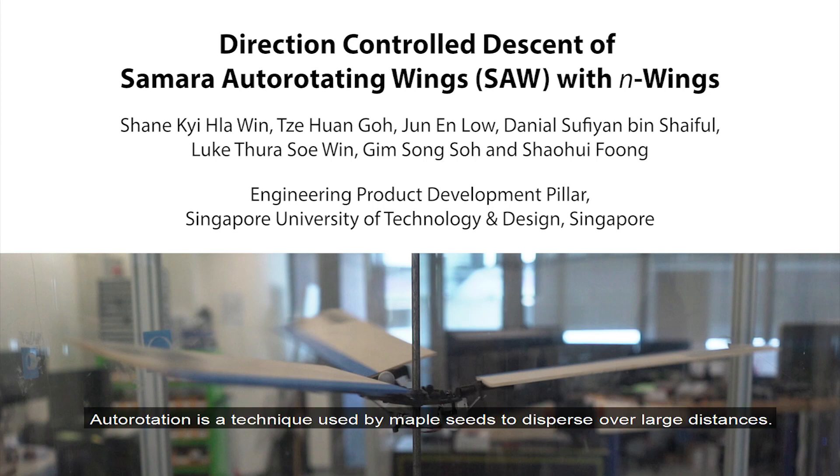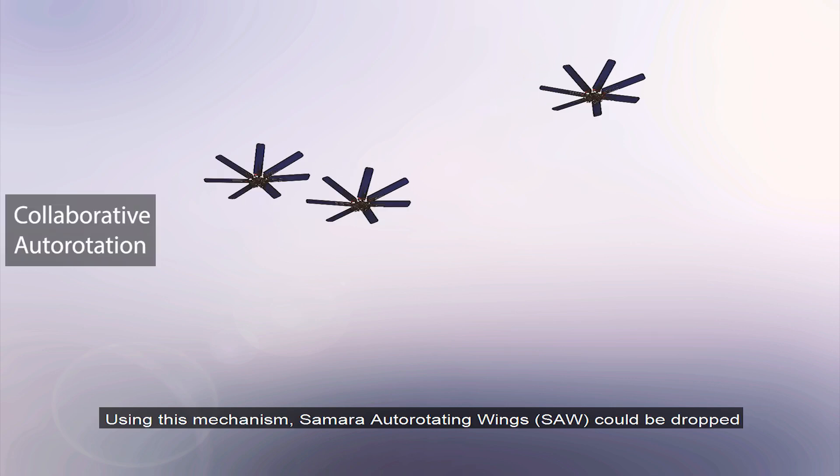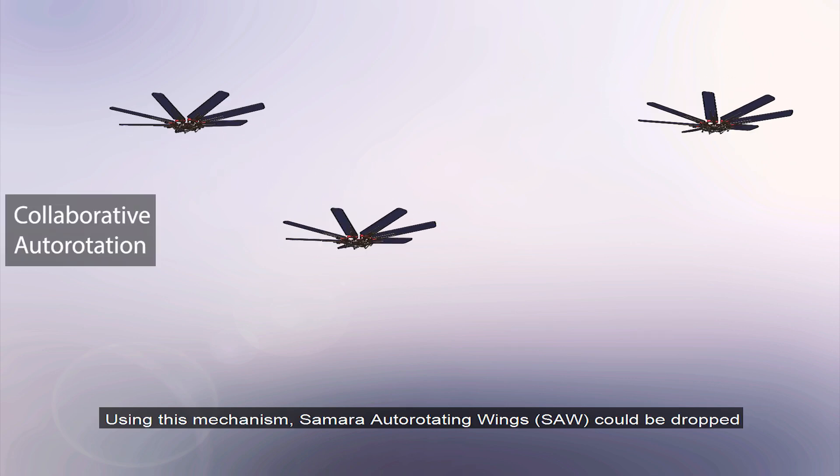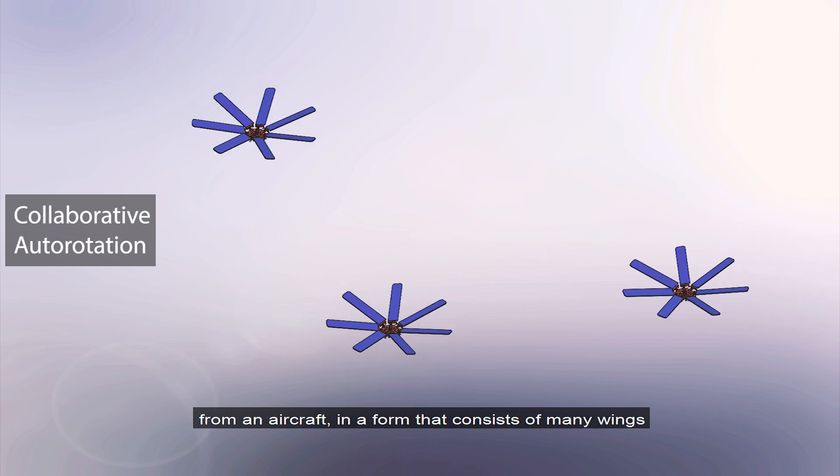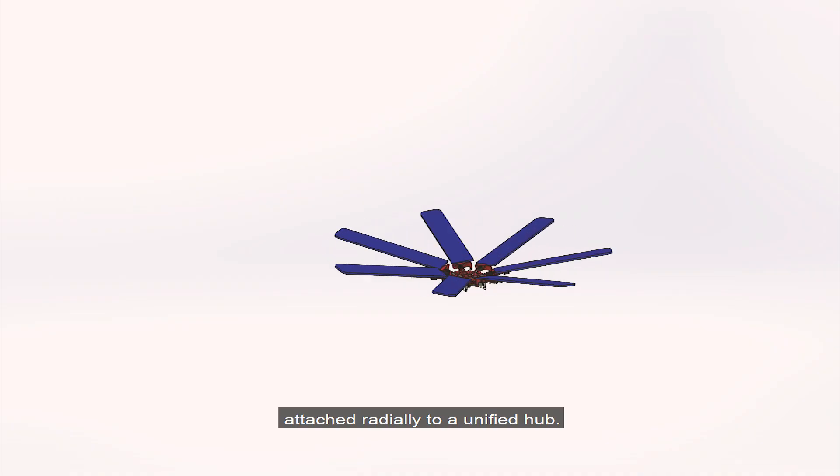Autorotation is a technique used by maple seeds to disperse over large distances. Using this mechanism, Samura Autorotating Wings could be dropped from an aircraft in a form that consists of many wings attached radially to a unified hub.